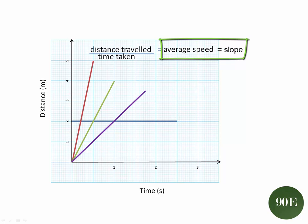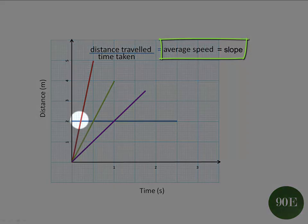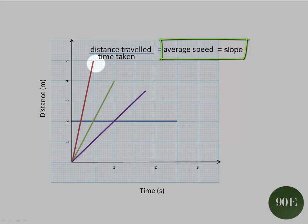You can see then that distance time graphs are really useful because intuitively, just at a glance, you can tell which object was travelling at a faster speed than the other. Because the steeper the gradient, the faster the average speed.